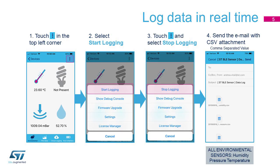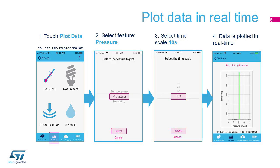The barometer application is running on the SensorTile.Box automatically, and you can check out the readings immediately. It is also possible to log the data on the phone. Click on the button with three dots on the top right corner. Hit the Start Logging menu item to start the data logging. Hit the Stop Logging item when you want to stop.